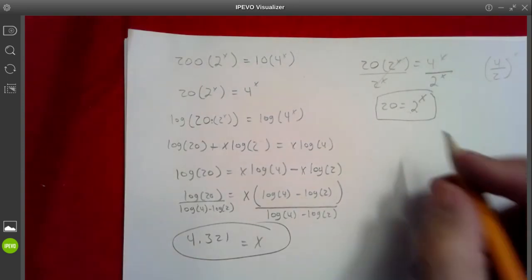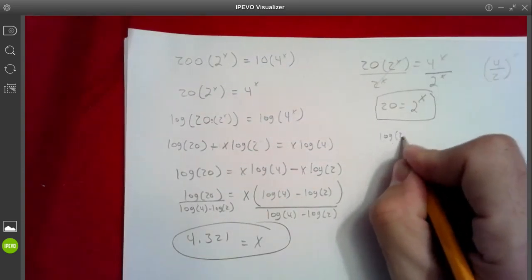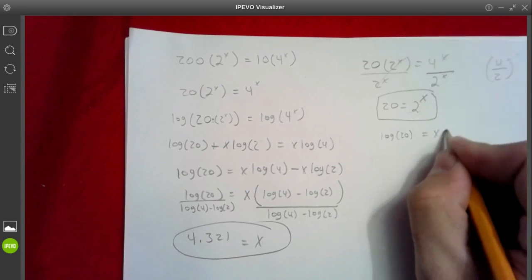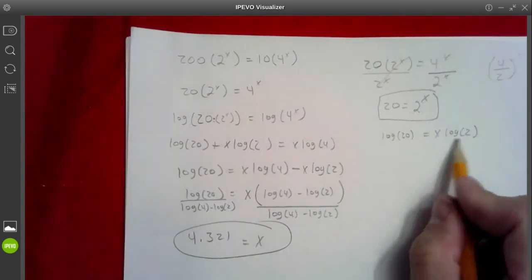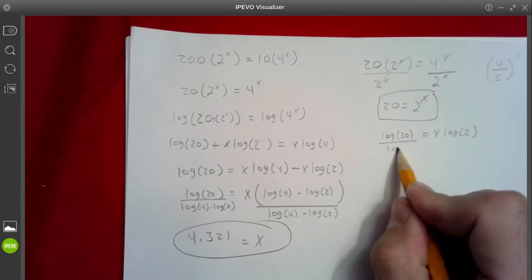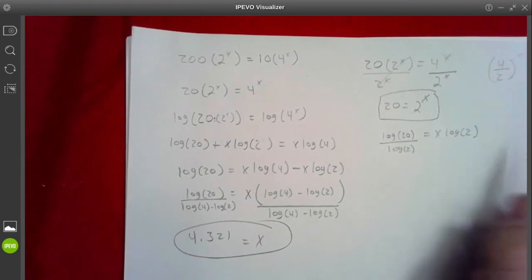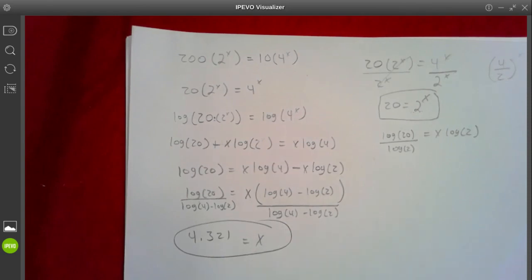Just take the log of both sides. You get log 20 equals x log 2. And then divide by log 2. That would have been a much easier route. Comes out to the same answer, though. Let's go.